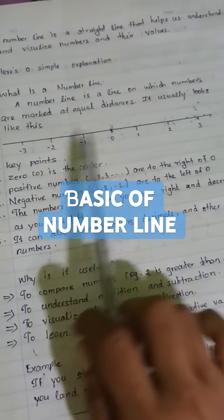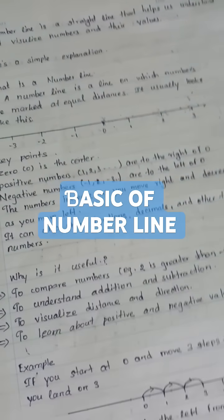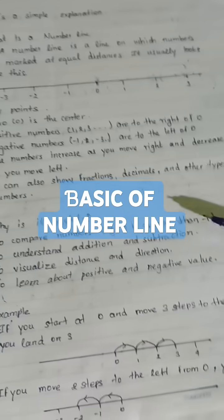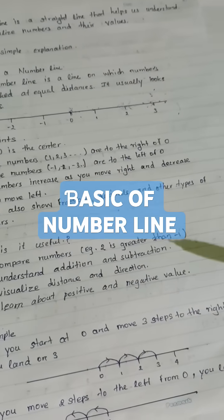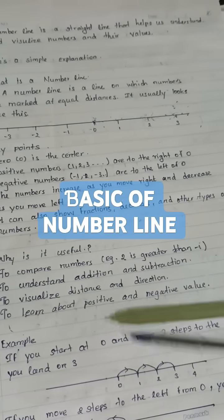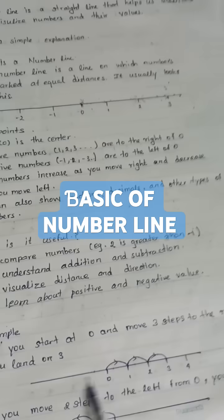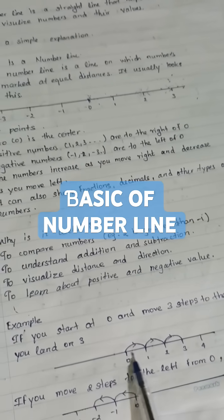Example: if you start at 0 and move 3 steps to the right, you land on 3. Draw the number line, start at 0, move 3 points, land on 3.